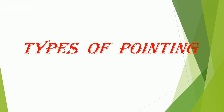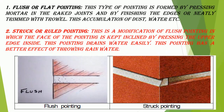Types of pointing. 1. Flush or flat pointing: This type of pointing is formed by pressing mortar into the raked joints and finishing the edges neatly trimmed with a trowel. This type tends to accumulate dust, water, etc.